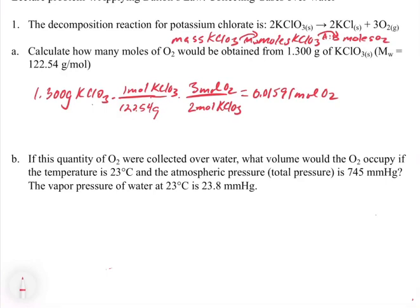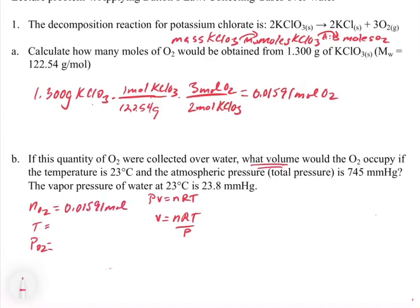For the second part: if this quantity of O₂ were collected over water, what volume would it occupy if the temperature is 23 degrees Celsius and the atmospheric pressure is 745 mmHg? The vapor pressure of water is 23.8 mmHg. To get the volume, we set up PV = nRT and solve for V = nRT/P. We need the moles of O₂ (0.01591 mol from part one), the temperature (23°C = 296.15 K), and the pressure of O₂.